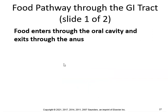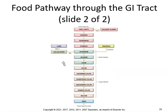Food enters through the oral cavity and exits through the anus. Here's how it goes: salivary glands, oral cavity, pharynx, esophagus, stomach — then the liver, gallbladder, and pancreas dump their enzymes and secretory juices into the duodenum. Then it goes to the jejunum and ileum — the three parts of the small intestine — then cecum, ascending colon, transverse colon, descending colon, sigmoid colon, rectum, and anus — and then leaves the body.